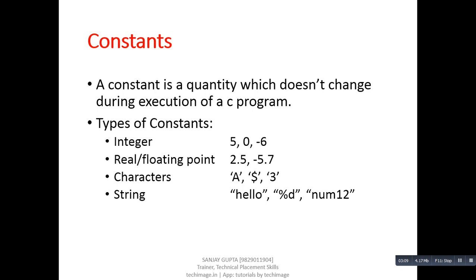Third is character constants. Character constant can be an alphabet, digit or special symbol. As you can see here, character constants are enclosed in single quotes. So, character constant can be a single character enclosed in single quotes.